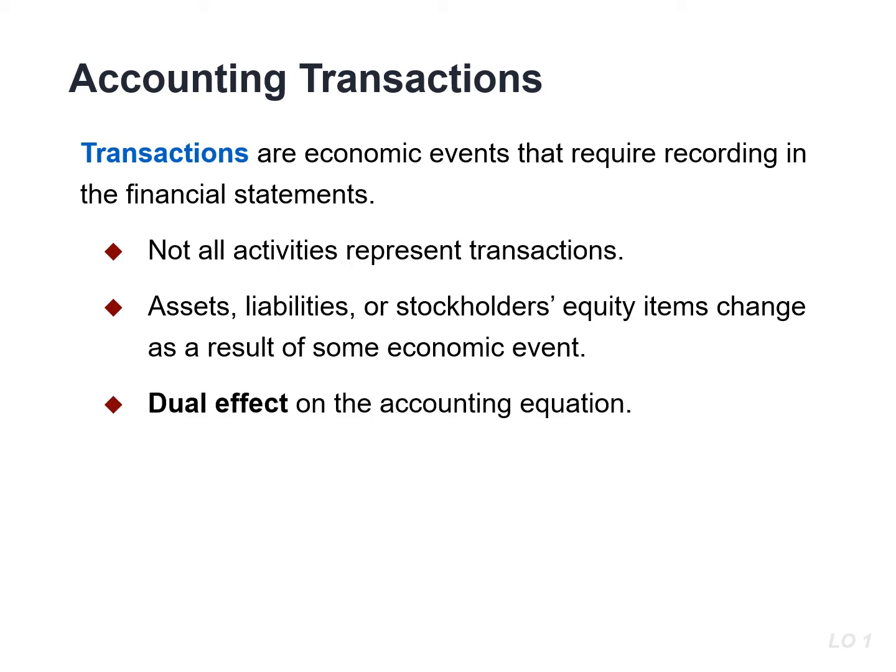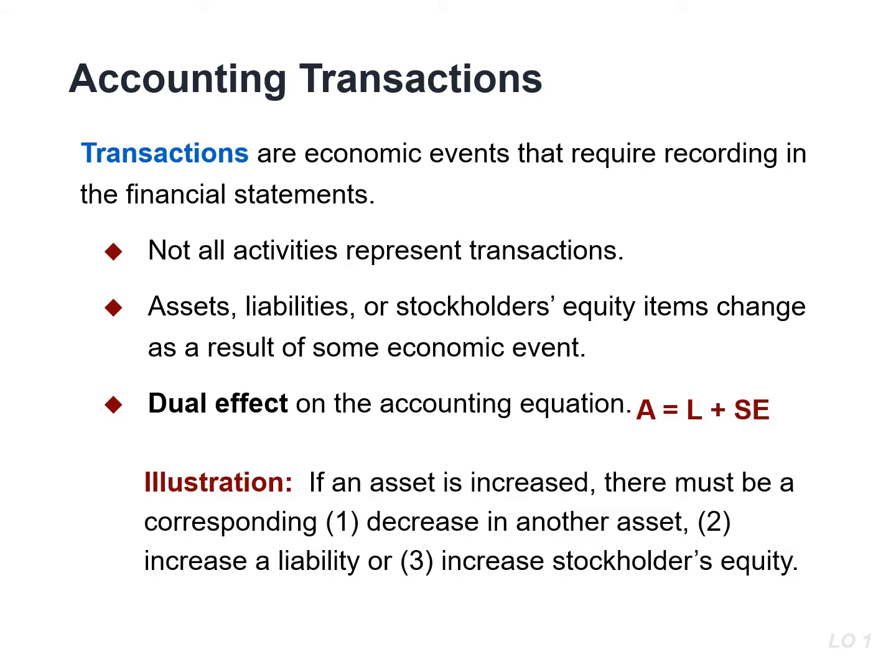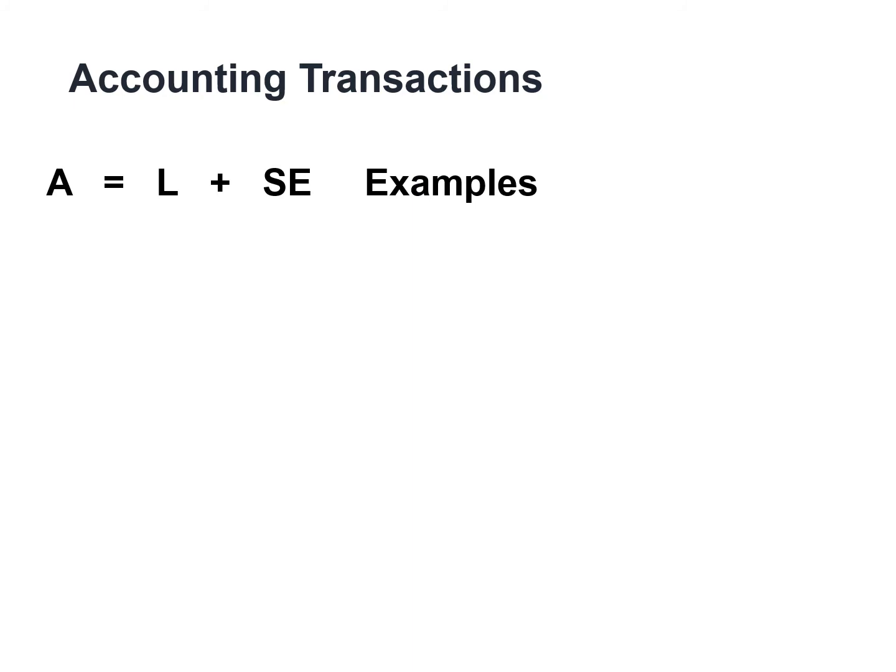Each transaction has a dual or double-sided effect on the equation. For example, if an asset is increased, there must be a corresponding decrease in another asset or an increase in a liability or stockholders' equity item. There are numerous business transactions. Let's look at some possible transactions.